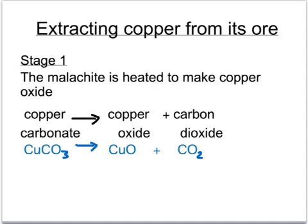In order to extract copper from this ore, we have to go through two stages. The first stage is to roast the ore, and this breaks down the copper carbonate into copper oxide and carbon dioxide. This is an example of thermal decomposition.